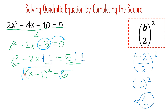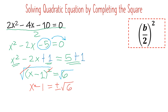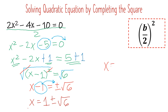The square root of (x − 1)² cancels to x − 1. Since 6 is not a perfect square, we write ±√6. Transposing −1 to the other side gives x = 1 ± √6. Separating the two solutions: x = 1 + √6, and x = 1 − √6. Those are the two values of x.